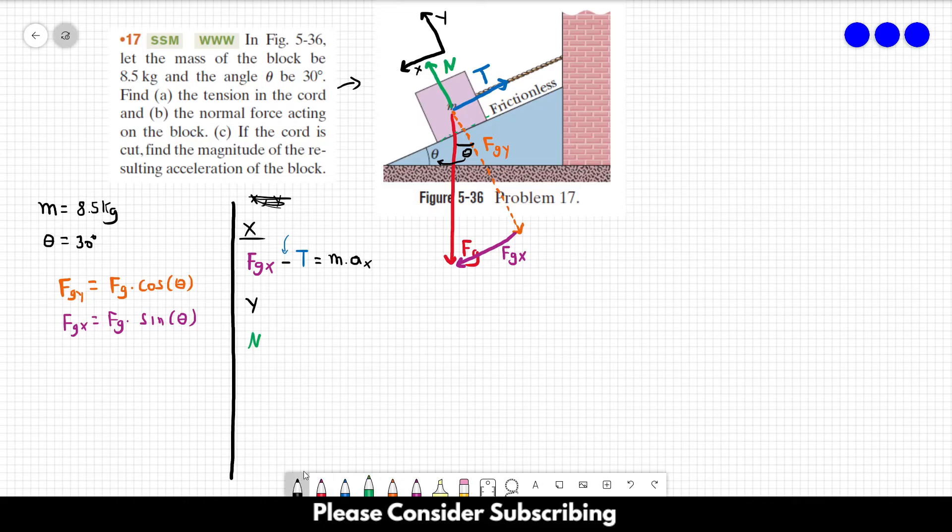And we have FG_Y. However, FG_Y is pointing downwards, so it is negative FG_Y, and this is equal to mass times the acceleration in the y-direction. So those are the two equations that we have.